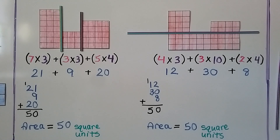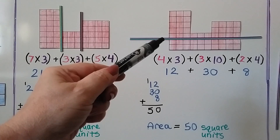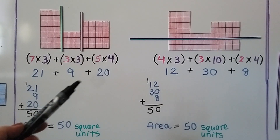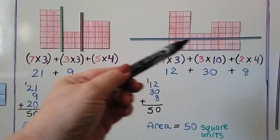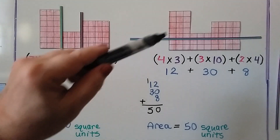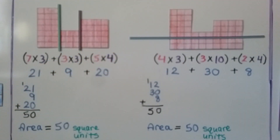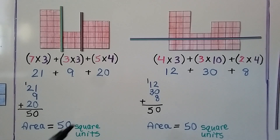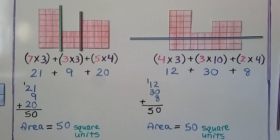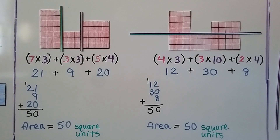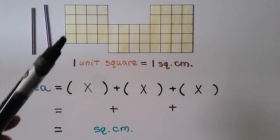It doesn't matter how we break the figure apart into rectangles — we just need to make sure we're making full, complete rectangles. If a line doesn't complete a rectangle, we'd need to add more lines to form proper rectangles. We must make sure we're making full rectangles so we can multiply length times width.